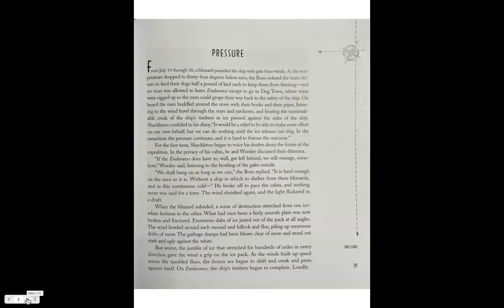No man was allowed to leave Endurance except to go to Dog Town, where wires were rigged up so the men could grope their way back to the safety of the ship. On board, the men huddled around the stove with their books and their pipes, listening to the wind howl through the rigging and hearing the unmistakable creak of the ship's timbers as ice pressed against the sides.